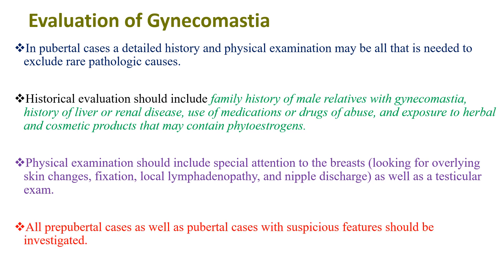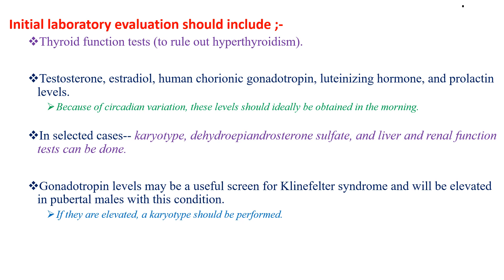All prepubertal cases, as well as pubertal cases with suspicious features, should be investigated. Initial laboratory evaluation should include thyroid function tests to rule out hyperthyroidism, testosterone, estradiol, human chorionic gonadotropin, luteinizing hormone, and prolactin levels. Due to circadian variation, these levels should ideally be obtained in the morning.